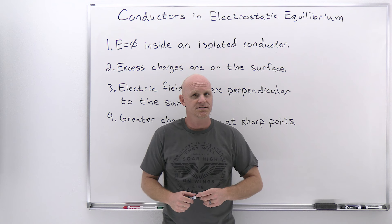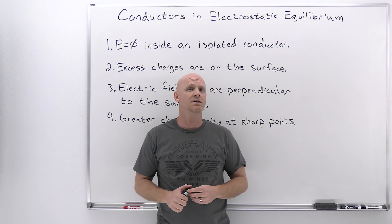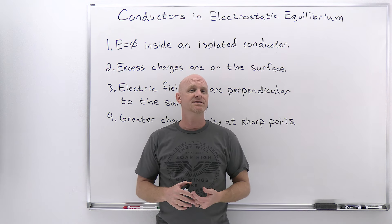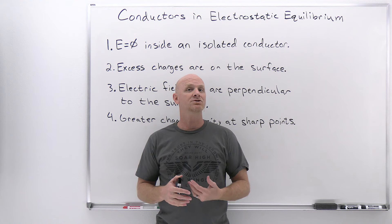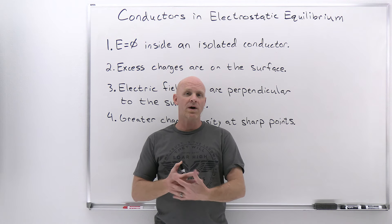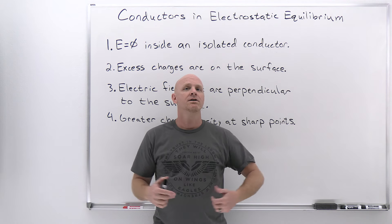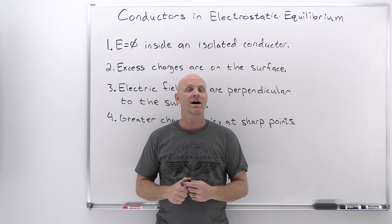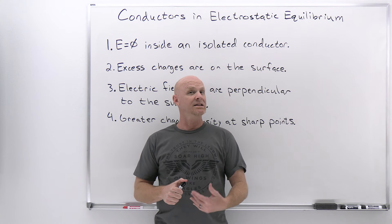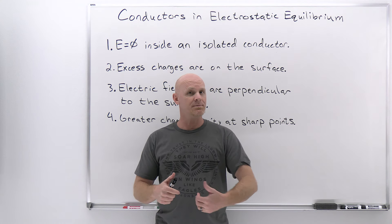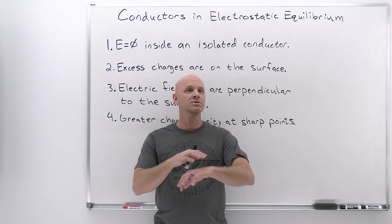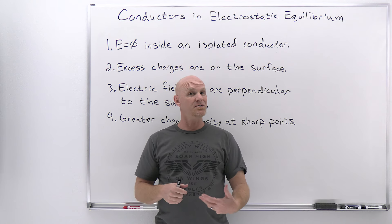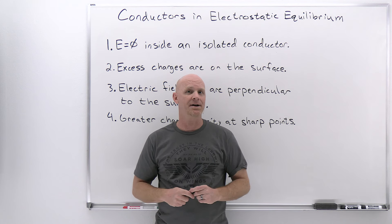Let's start this lesson off by reminding ourselves of what a conductor is. Simply put, a conductor is a material that allows charge to move around freely throughout the substance. A good example is a metal. We now understand that it is the electrons that have the potential of moving throughout the surface, not the protons, which are kind of trapped in the nucleus of each atom.